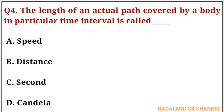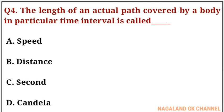Question number four: the length of the actual path covered by a body in a particular time interval is called what? The correct answer is option number B, that is distance.